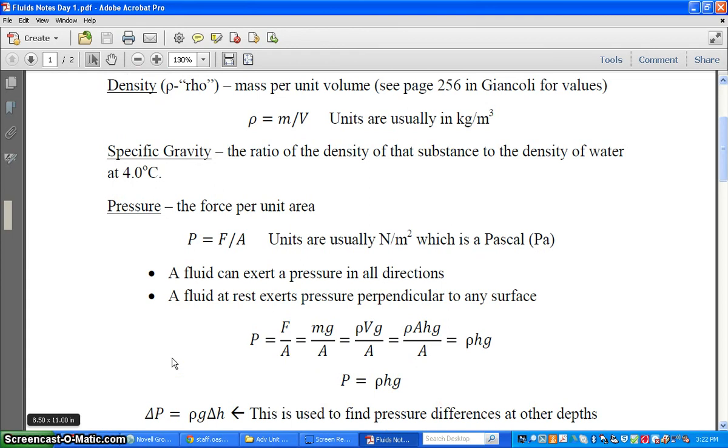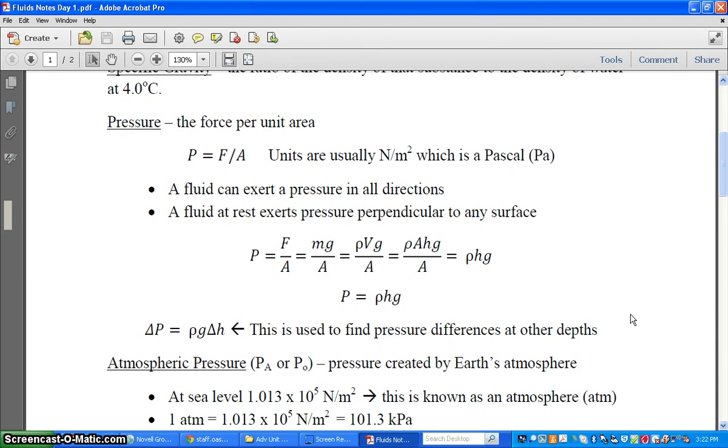Sometimes if you want to find out pressure differences, like, say, at different depths of the ocean, you can figure out the change in pressure. And the density of the water doesn't change. Gravity doesn't change. But the height will change. So you use, to find a delta P, a change in pressure, you just need the delta H at different depths. Okay? All right.